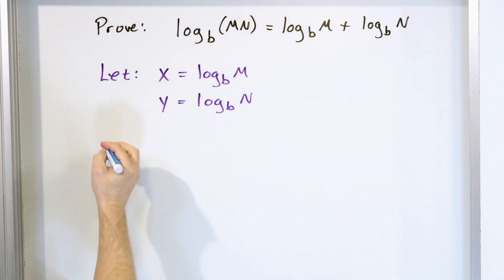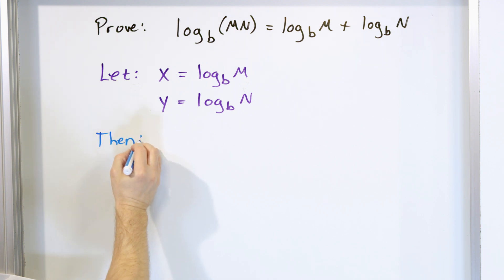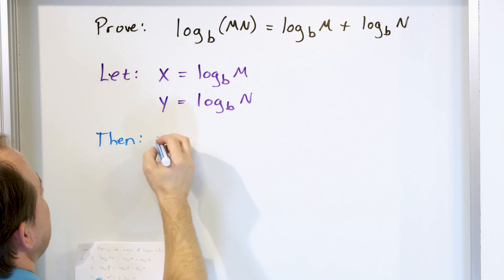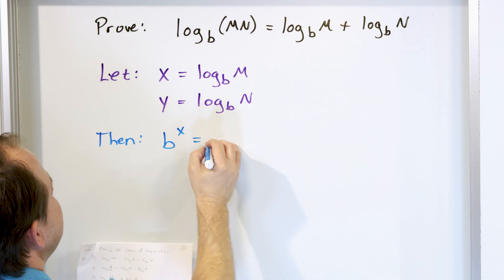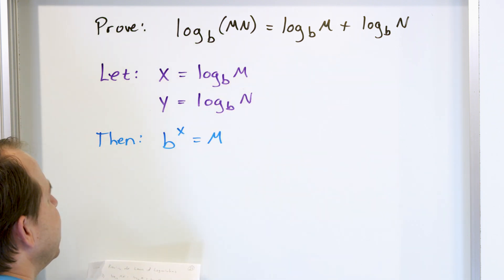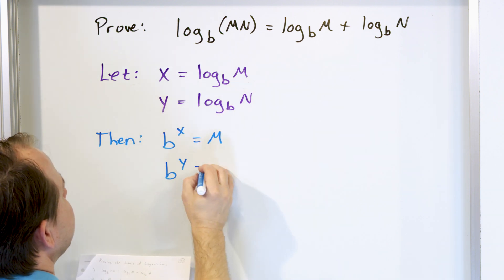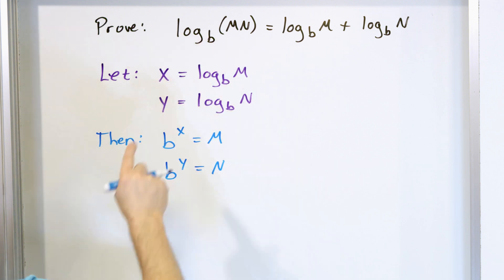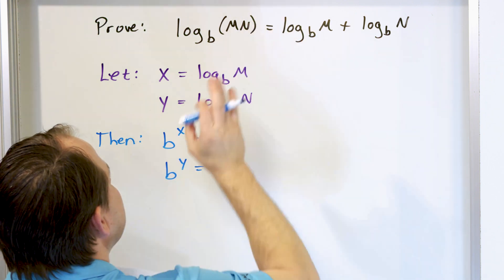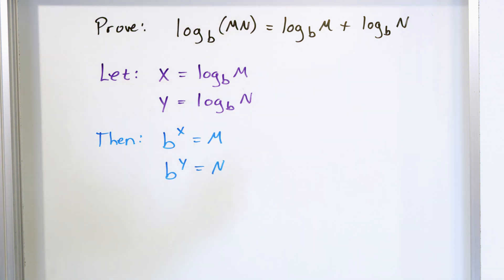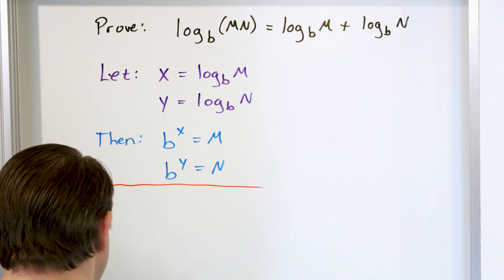If we let those things be true, then by the definition of a logarithm: b to the power of x equals m, and b to the power of y equals n. Now I know what m and n are from these definitions. So m times n equals b to the x times b to the y. Because these have the same base, I can add the exponents: m times n equals b to the power of x plus y.